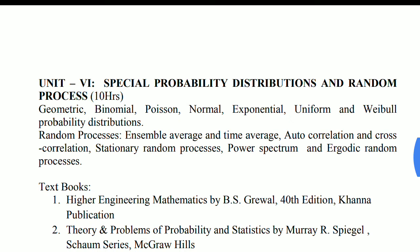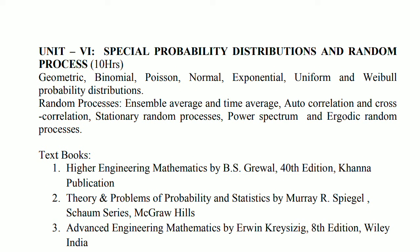Unit number 6, Special Probability Distribution and Random Process. I will suggest you to do binomial and Poisson distribution here — there are only 7 to 8 questions on those topics. And I will also suggest you to do exponential and uniform distribution, finding the mean, variance, standard deviation, moment generating function, and characteristic function. This is a repetition of what we are already doing in the above unit, applied here for exponential and uniform distribution under both unit 5 and unit 6.